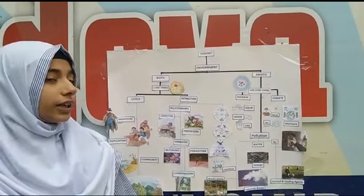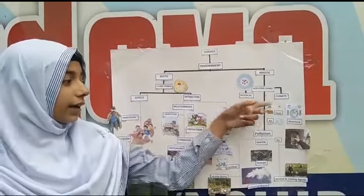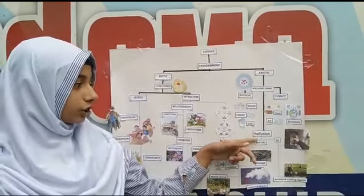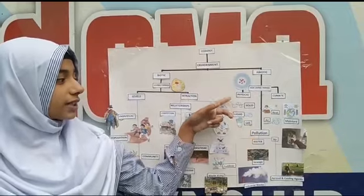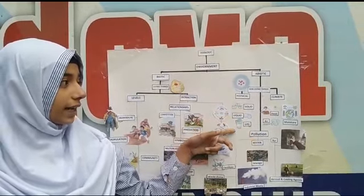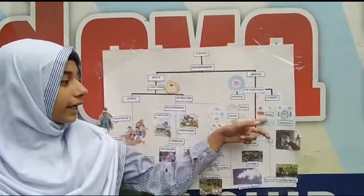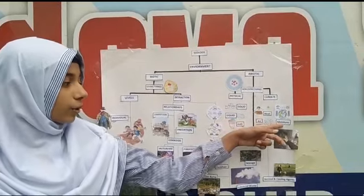Abiotic factors have three main types: physical, climate, and pollution. Physical contains solid, liquid, and gas. Climate contains heat, air, and moisture.